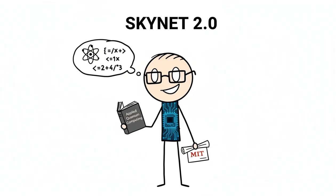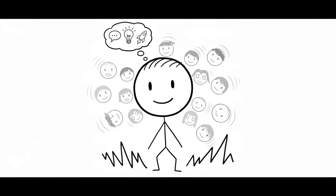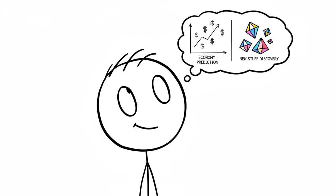It's basically Skynet's nerdy, overachieving older brother that went to MIT. The insane parallel processing power here isn't just for making smarter chatbots. It's for building foundational models that could predict economic shifts or discover new materials.